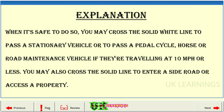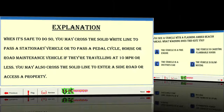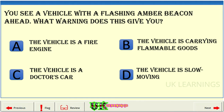Explanation: When it's safe to do so, you may cross the solid white line to pass a stationary vehicle, or to pass a pedal cycle, horse, or road maintenance vehicle if they're travelling at 10 miles per hour or less. You may also cross the solid line to enter a side road or access a property.